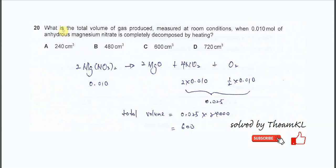Question 20: What is the total volume of gas produced, measured at room conditions, when 0.01 mol of anhydrous magnesium nitrate is completely decomposed by heating? First, you need to construct the equation for the decomposition of magnesium nitrate.